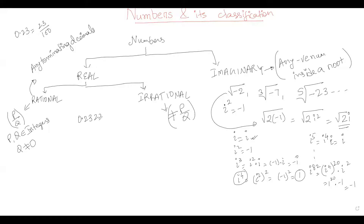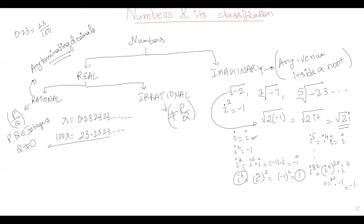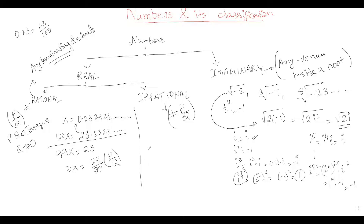What about 0.232323 and so on? This is non-terminating, so let's check if it can be converted to p by q form. Let x equal 0.2323... Multiplying by 100 gives 100x equals 23.2323... Subtracting: 99x equals 23, so x equals 23 upon 99, which is in p by q form. So 0.23 repeating is also a rational number.